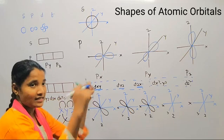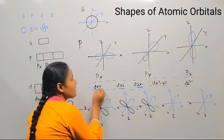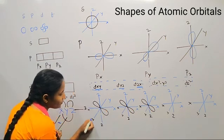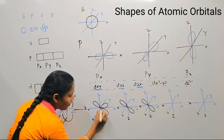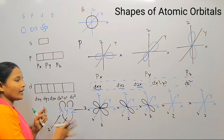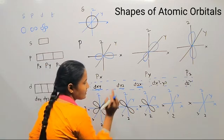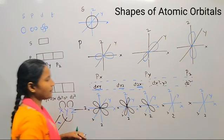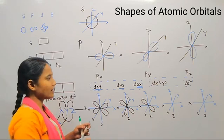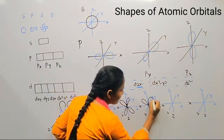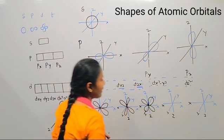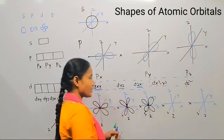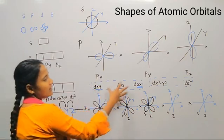The d orbital has a double dumbbell shape. For dxy, the double dumbbell shape lies in between the x and y axes. For dyz, the double dumbbell shape lies between the y and z axes. Similarly for dzx, it lies between the z and x axes. These are the shapes of dxy, dyz, and dzx.